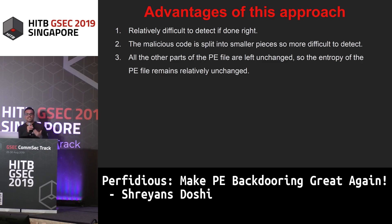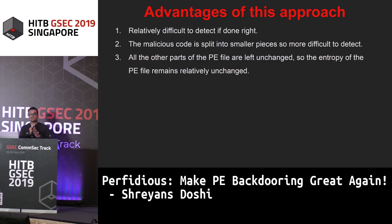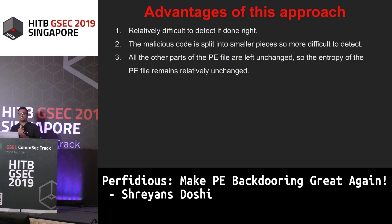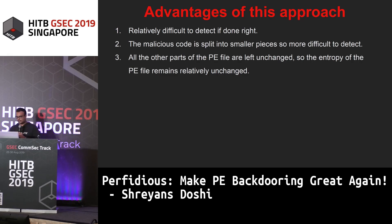You need to recalculate those calls and change all data fields inside the optional header and file header while also increasing the size of the PE file. This is really difficult to do unless you have complete control over your PE file — and that is what Perfidious aims to provide: complete control over the PE file so you can edit each and every section and structure present within it.